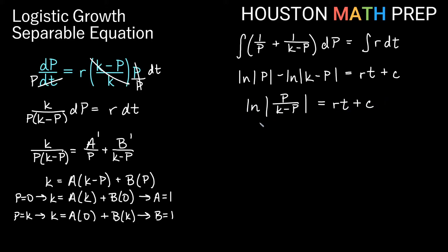Now I'll need to get rid of my ln on the outside here. So take the exponential of both sides. So e to the power of that side, e to the power of that side, e to the ln of something is just that something. So we get absolute value of P over k minus P is equal to, all of this is now in an exponent. This is e to the rt plus c. Let's use properties of exponents here to break this up into two exponentials. So we'll go ahead and say absolute value of P over k minus P is equal to e to the rt times e to the c. Now this last piece here, what is e to some constant? Well that's just going to be a constant still.